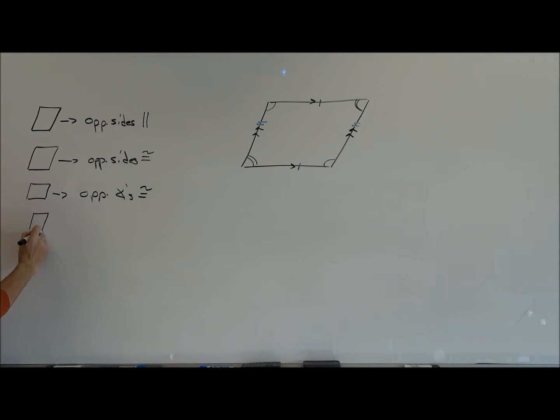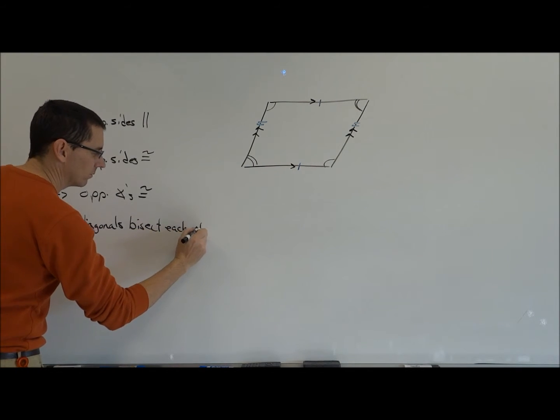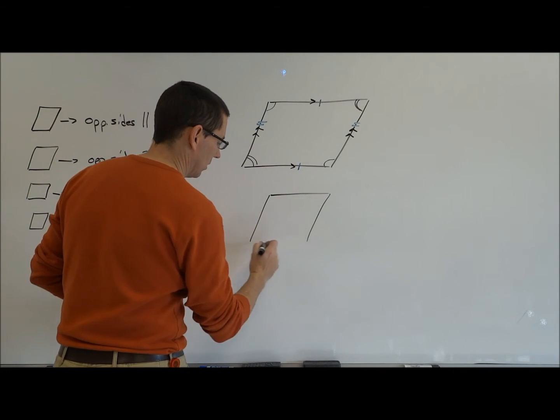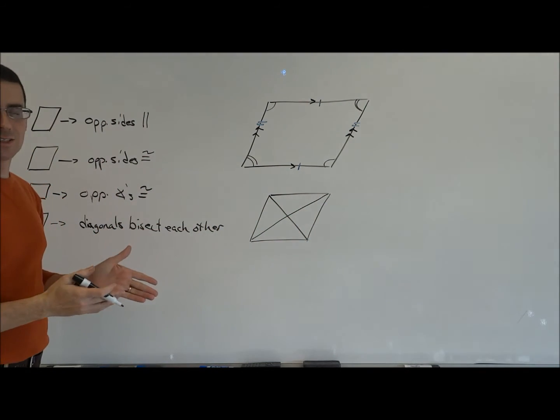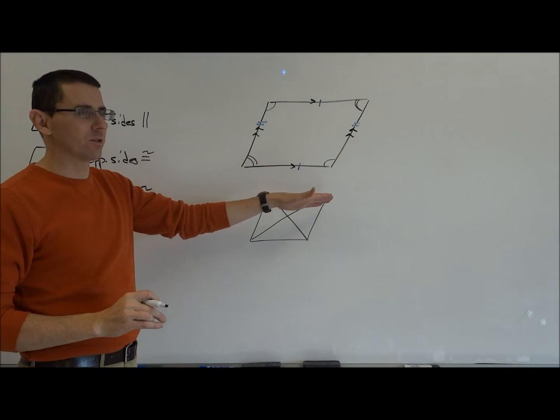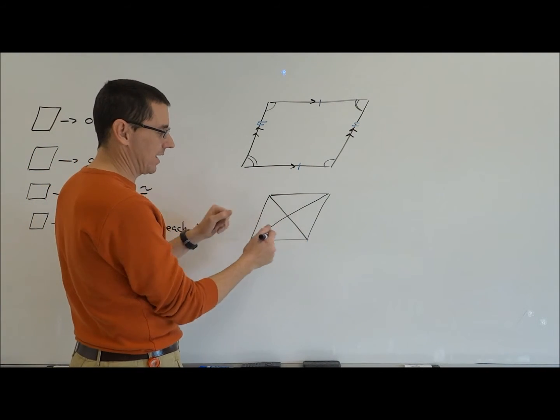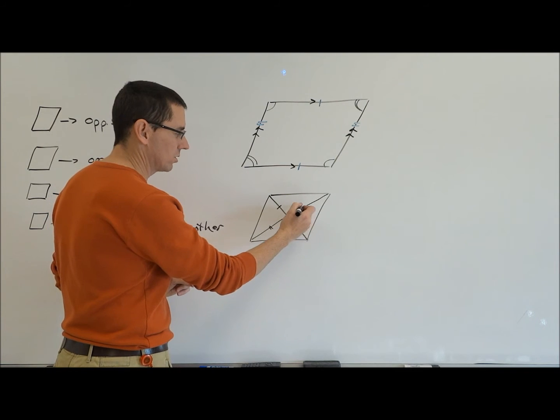And then the last one, and again, these are all theorems. We could prove these. But the last one deals with a parallelogram implies the diagonals bisect each other. Now, what does that mean? So, now, I don't want to crowd that one up. So, let me just draw a different one down here. If I drew in both diagonals, the diagonals bisect each other. Now, what does it mean? What does it mean if a segment bisects another segment? It intersects that segment at its midpoint. If that's the midpoint of this side, that midpoint would divide that segment into two congruent parts. So, I'm going to be able to show that that segment is congruent to that segment and that segment is congruent to that segment.